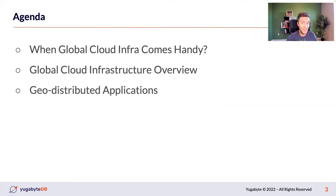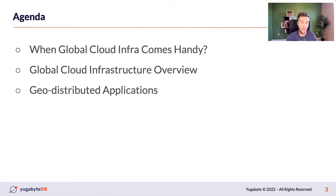Speaking about our primary agenda for today: first, we need to discuss how global cloud infrastructure is useful and can be leveraged for speed and compliance. After that, we will remind ourselves how a typical cloud infrastructure looks like, selecting Google Cloud Platform as an example. And finally, we will discuss how to build geo-distributed applications for speed and compliance.